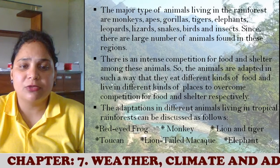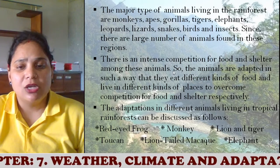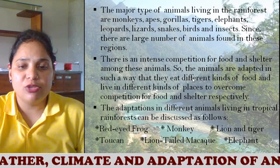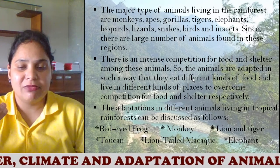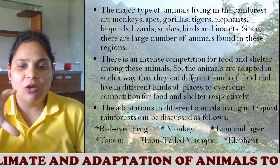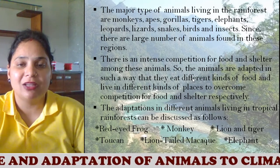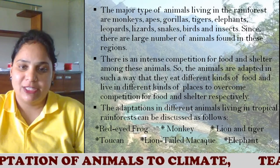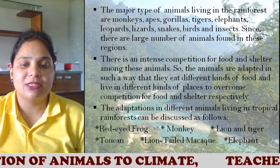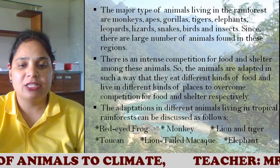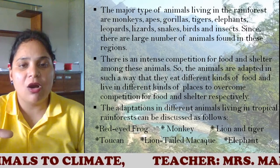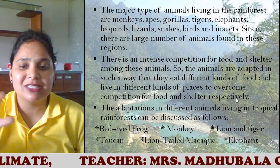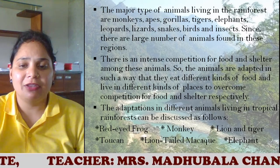Because there are so many animals, there is definitely competition for food and shelter. These animals have adapted in such a way that they eat different kinds of food and live in different kinds of places to overcome this competition. That's why we have different types of food chains and food webs in the ecosystem. The nature has provided all animals with different kinds of food and shelter — and that is why there is survival of the fittest.